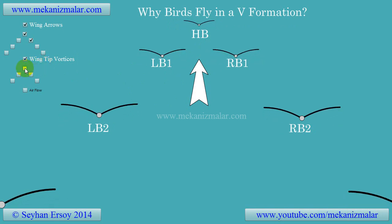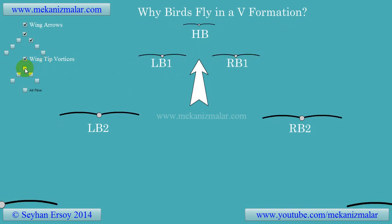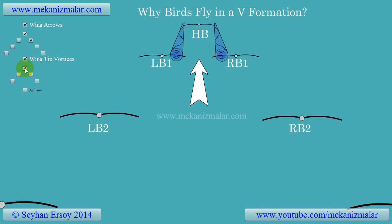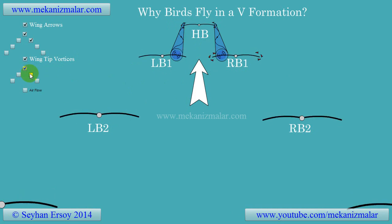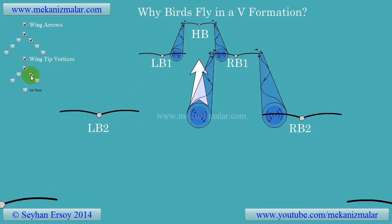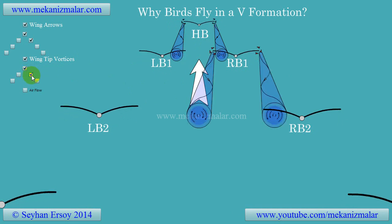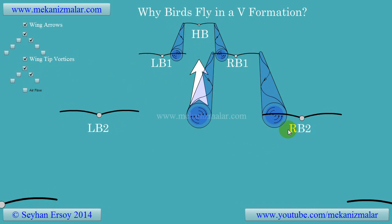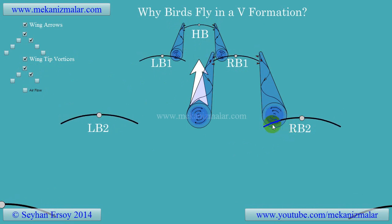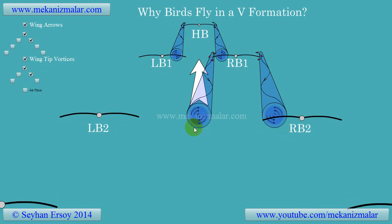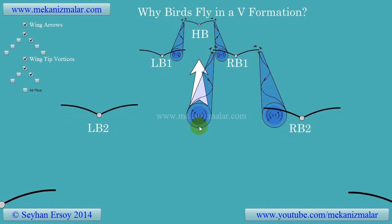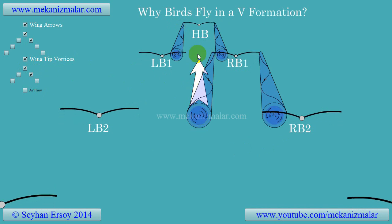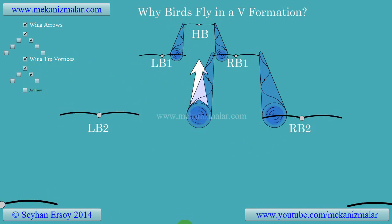In this video, these vortices are shown as cone-shaped figures extending from the tip of the wing in the opposite direction of flight. These vortices are very persistent and extend along the flight path as long streaks.